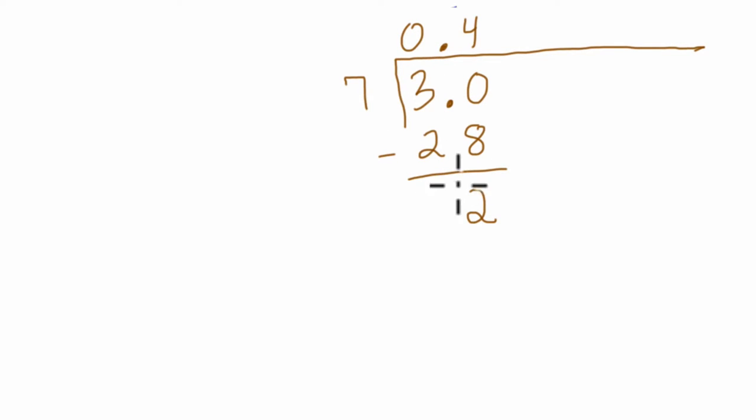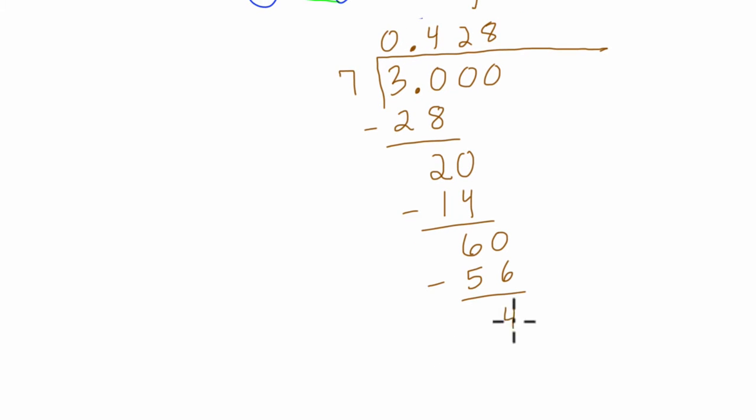So 7 going into 2, we think of it as 20, and 7 goes into 20 twice, right? 7 times 2 is 14. 20 minus 14 is 6. We add our 0, keep going, 7 goes into 60 eight times. 7 times 8 is 56. 60 minus 56 is 4.